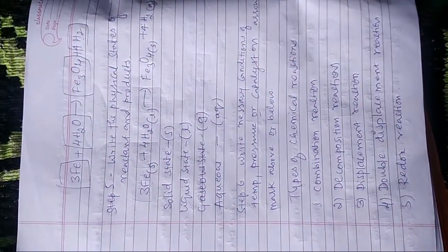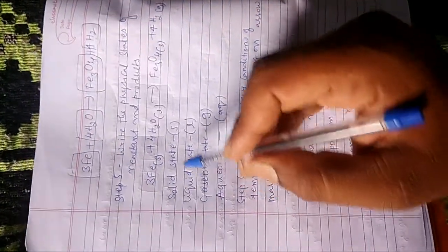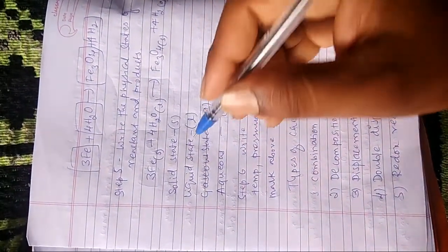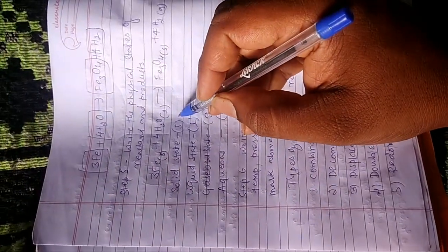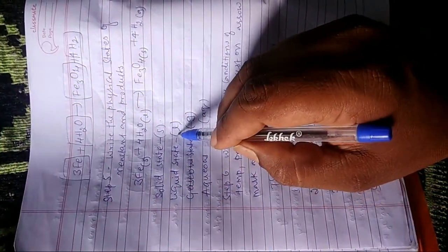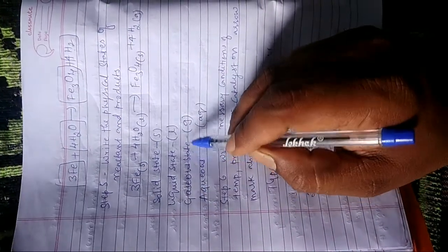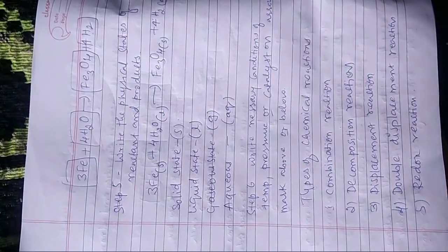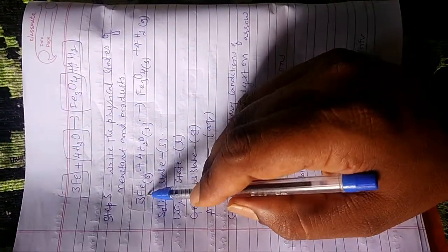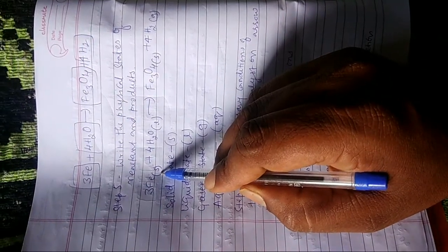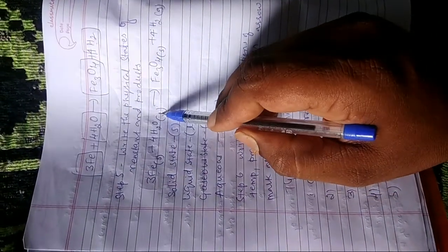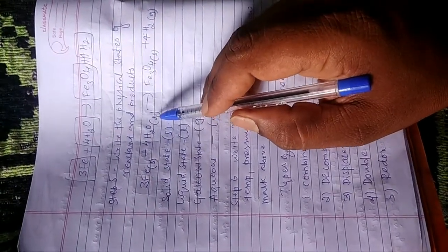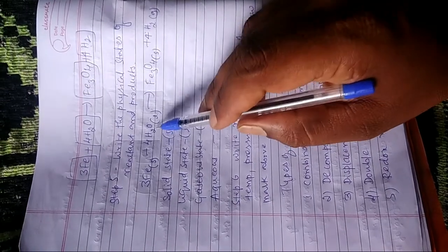Step 5: Write the physical state of reactants and products. The symbols are: solid = (s), liquid = (l), gaseous = (g), and aqueous = (aq). Iron is found in solid state, so it is (s). Water is a liquid, so (l) is written. If it were ice then it would be solid, but it is a liquid.